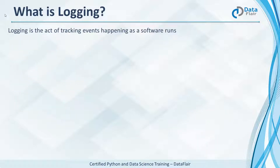When a software runs, a lot of processes and events happen. A record of those is maintained in log files on your machine. You can then later refer to these to evaluate past events, like if the software crashes and you wish to investigate. Logging is the act of tracking events as they happen.